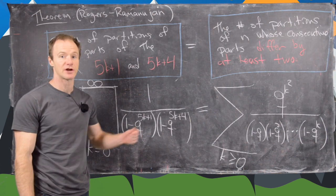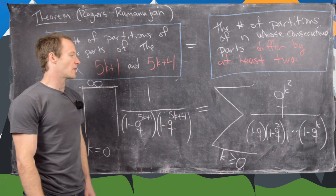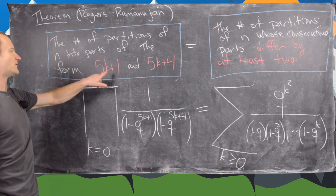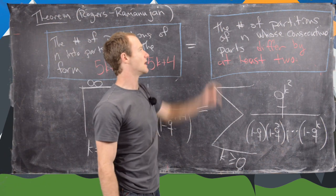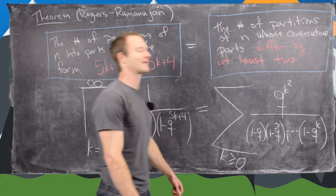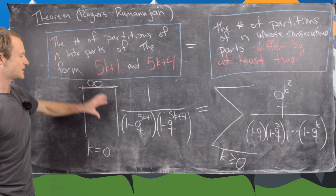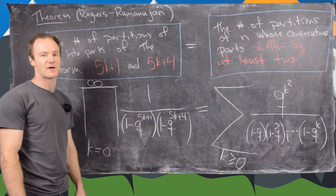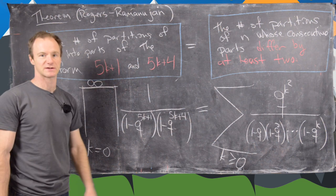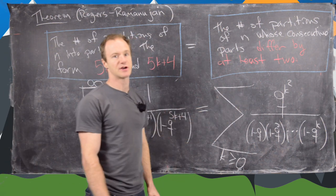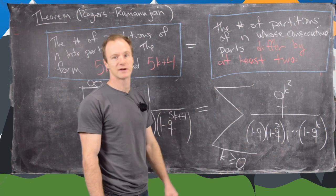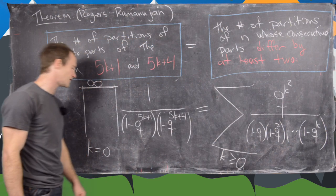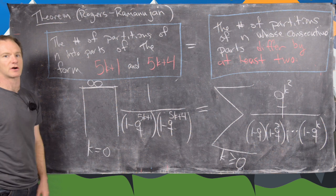We're now ready to state the generating function version of the Rogers-Ramanujan identity. The number of partitions of n into parts of the form 5k plus 1 and 5k plus 4 equals the number of partitions of n whose consecutive parts differ by at least two. The generating function for the left-hand side is the infinite product over k ≥ 0 of 1 over [(1 minus q to the 5k plus 1)(1 minus q to the 5k plus 4)], and the generating function for the right-hand side is the sum over k ≥ 0 of q to the k squared over (1 minus q)(1 minus q squared)...(1 minus q to the k). This equality is how we will prove the identity in the next video.